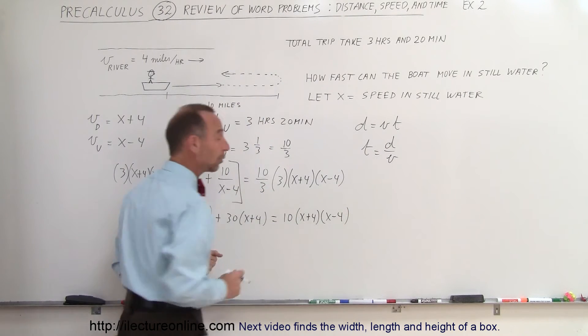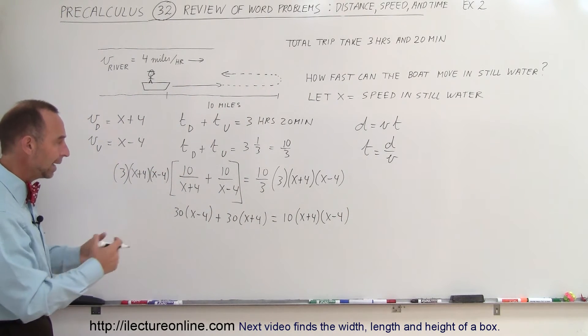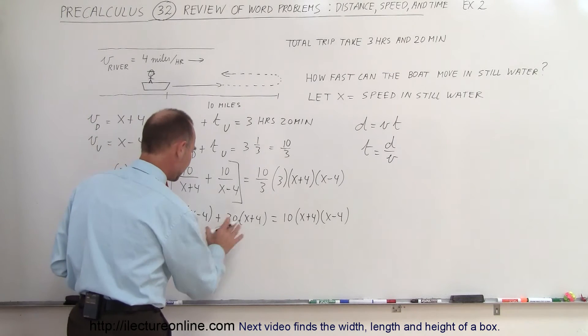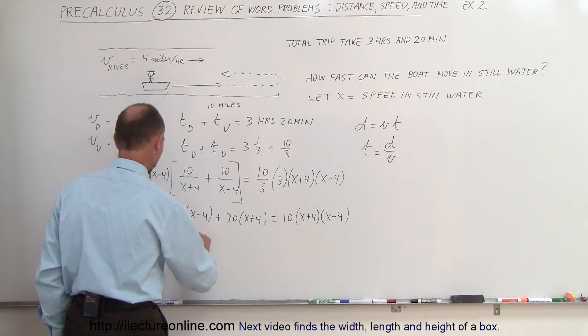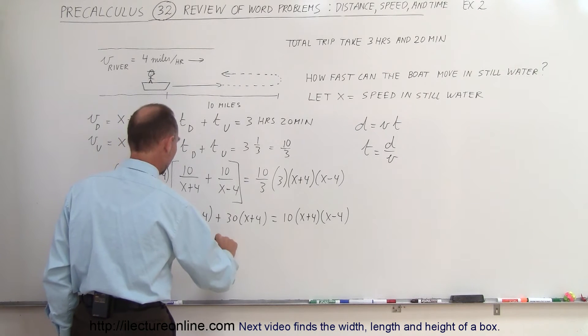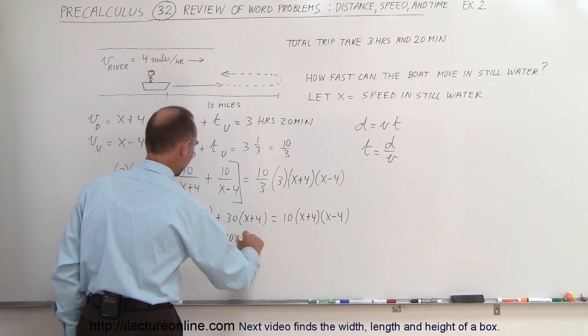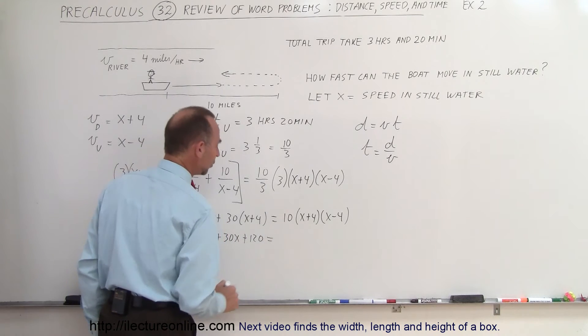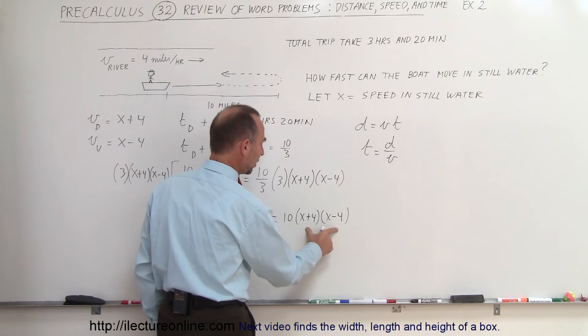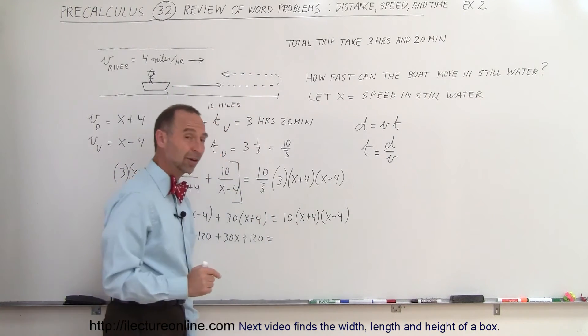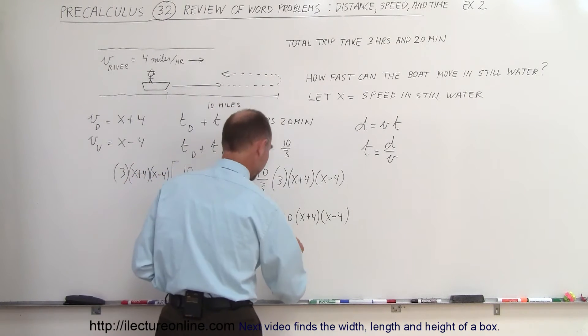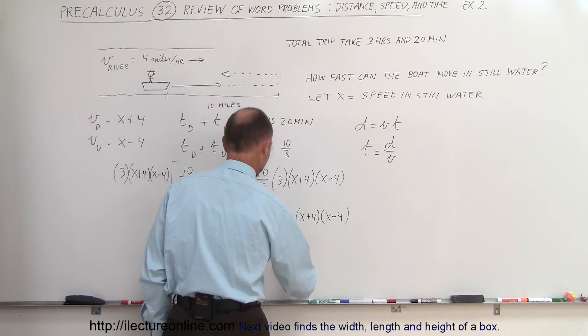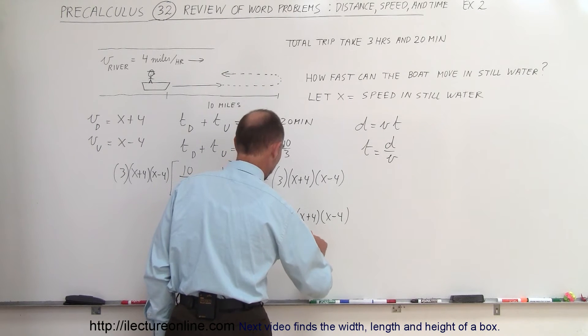And that will then turn into a quadratic equation which we need to solve. So let's work out the multiplication to get rid of the parentheses. So here we get 30x minus 120 plus 30x plus 120 is equal to ten times the product of these two. Since we have x plus 4 times x minus 4, that gives us the difference of the squares. So we have 10 times x squared minus 16.